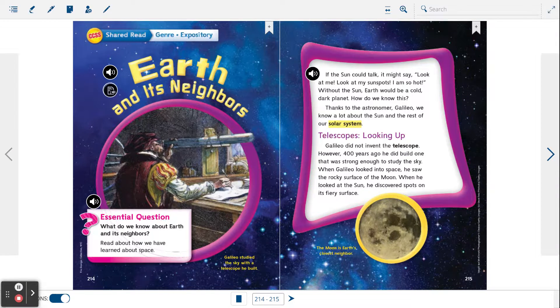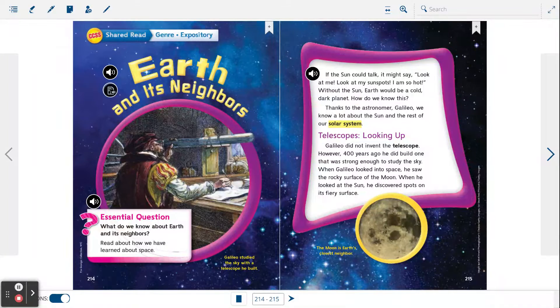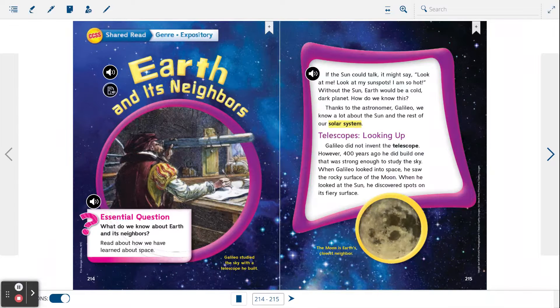If the sun could talk, it might say, look at me, look at my sunspots, I am so hot. Without the sun, Earth would be a cold, dark planet. How do we know this? Thanks to the astronomer Galileo, we know a lot about the sun and the rest of our solar system.